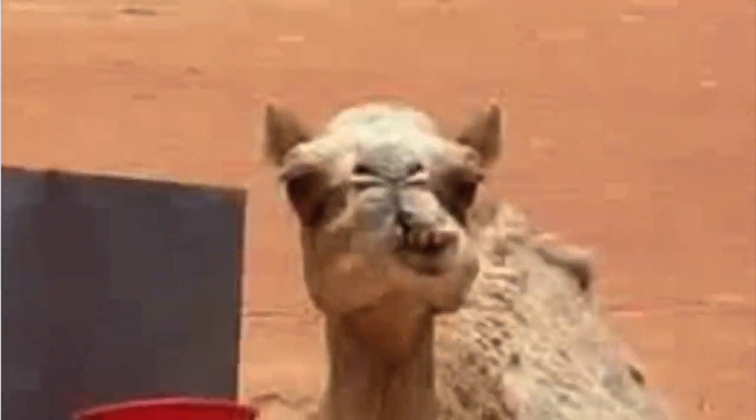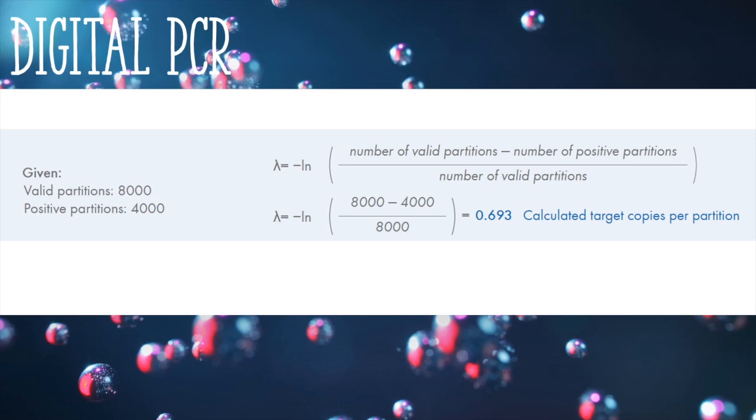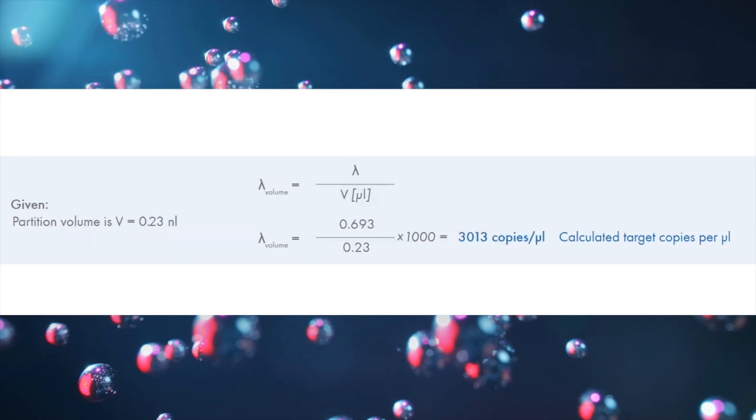Let's unpack that a little bit. Given this example from the Qiagen website, if you had 8,000 valid events but you detected only 4,000 of that as positive, you pop it into this equation and you end up being able to calculate the exact number of copies that you had without the use of a standard to compare it to.